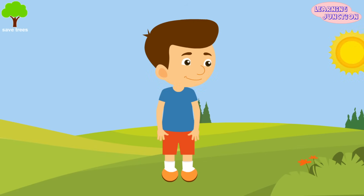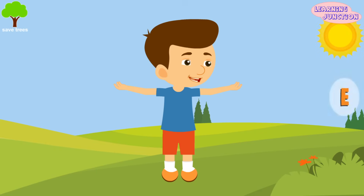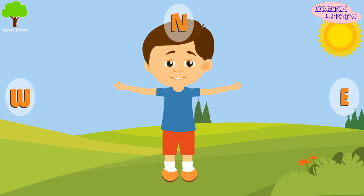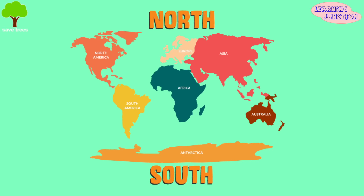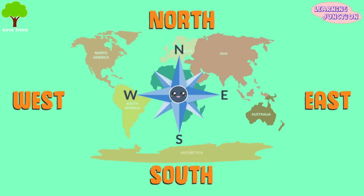The sun rises in the east. Stretch out your arms. Your left hand is now pointing east. Right hand is pointing west. North is at the top and south towards the bottom. This is east and this part is facing west. These are called the cardinal directions.